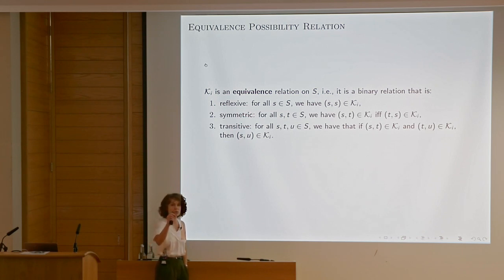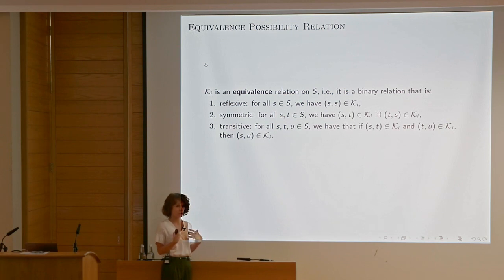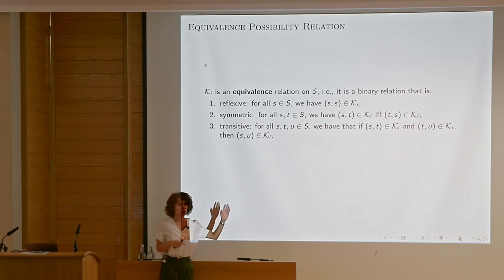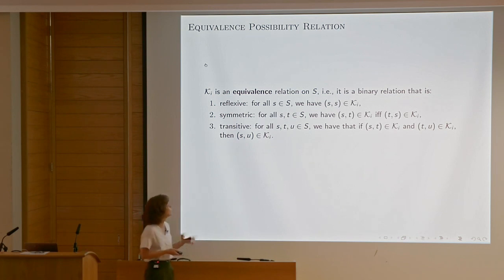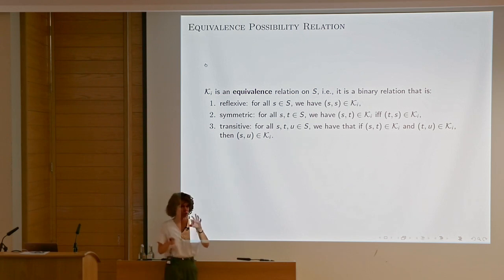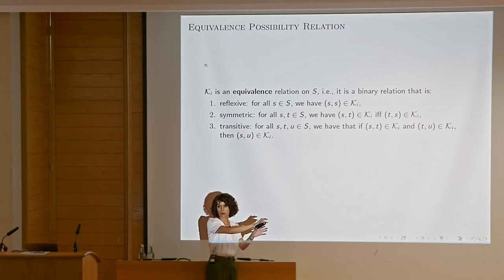We say such a relation is an equivalence if it's reflexive — so agents consider each world possible from that world, meaning if I'm in a certain state I consider it possible that this is actually the state. Symmetric — if from one world I consider another world possible, I also consider it the other way around. And transitive — if from one state I can consider the next state and then another state, then I directly from the first consider the third state.